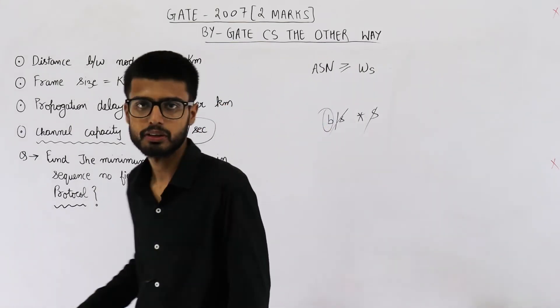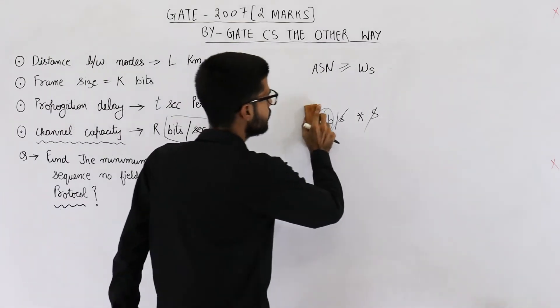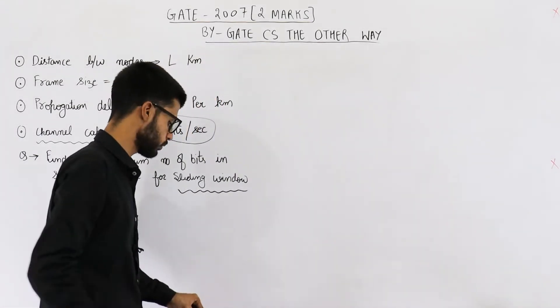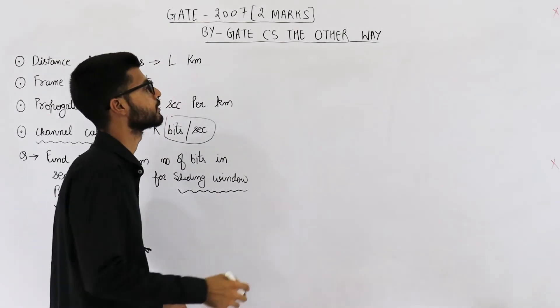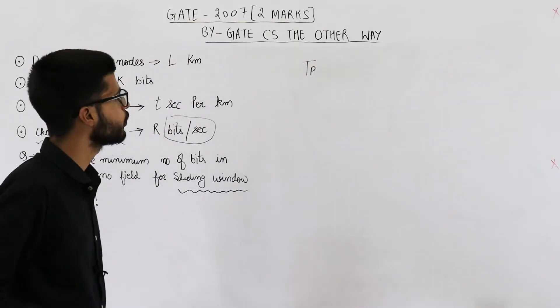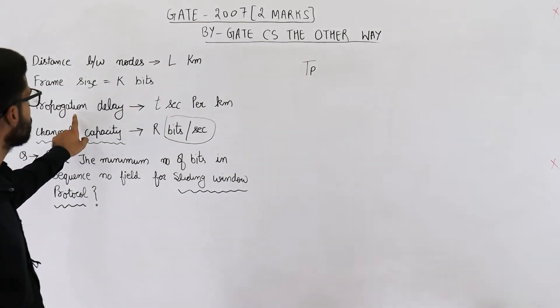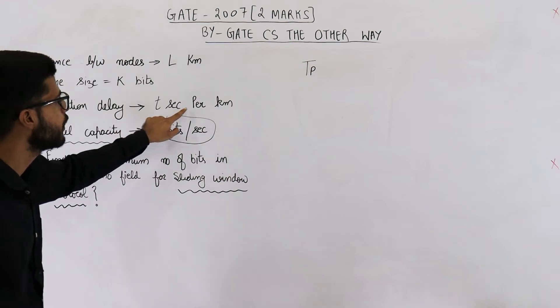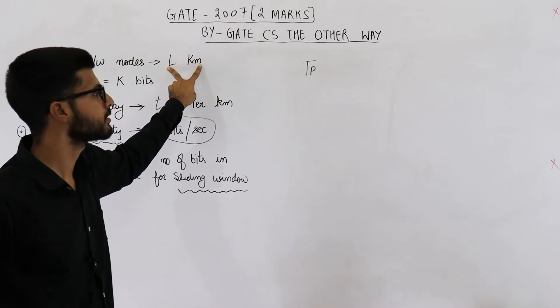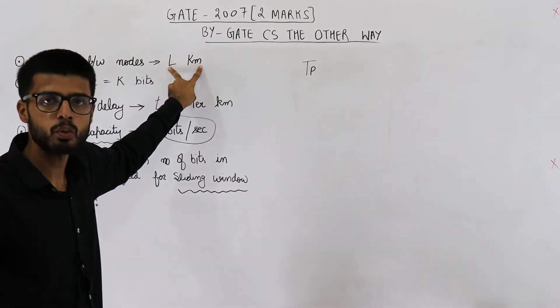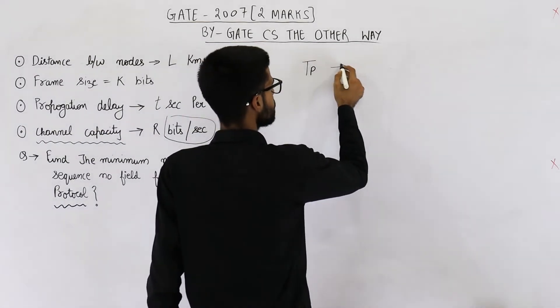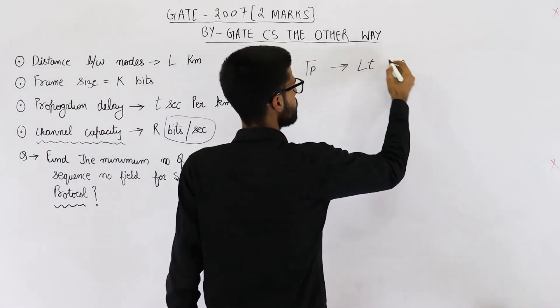Now we can start the question. So just have a look. They are saying distance between nodes is L kilometers. From here, let's determine what is the propagation delay. Propagation delay is given as T seconds for every kilometer. For one kilometer, it is T seconds. And total distance is L kilometers. What will be the total propagation delay? L into T seconds. So this is LT seconds.